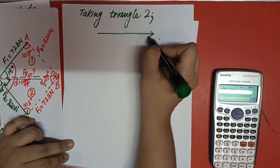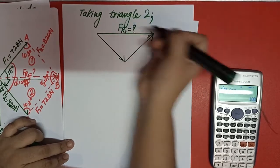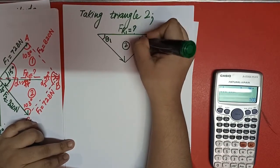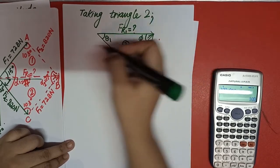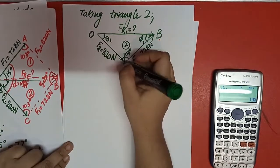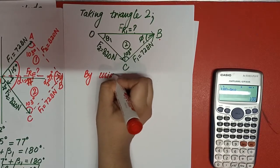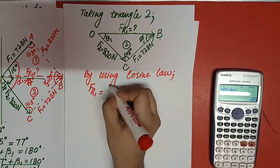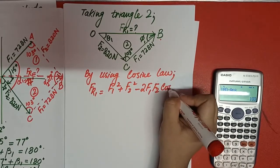Taking triangle number 2: FR1 is unknown, this angle is theta 1, this angle is phi 1, and this angle is 103 degrees. F1 equals 728 N and F2 equals 820 N, with vertices O, B, and C. Using the cosine law: FR1 equals square root of (F1² + F2² − 2·F1·F2·cos(103°)).